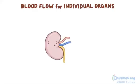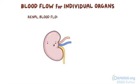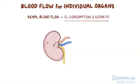The Fick principle is not only good for calculating cardiac output — it can also calculate blood flow for individual organs. For example, renal blood flow can be calculated by dividing oxygen consumption of the kidneys by the difference in oxygen content of the renal arterial blood and renal venous blood.